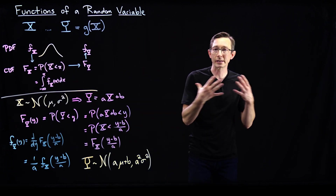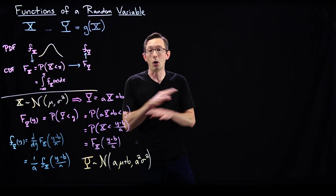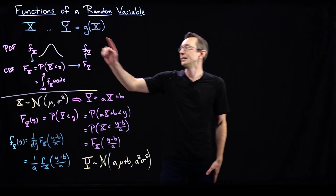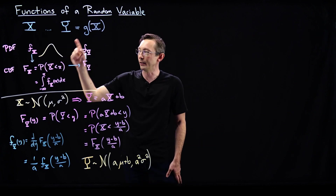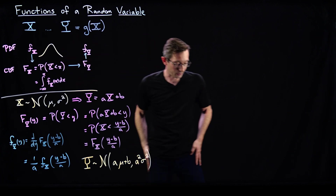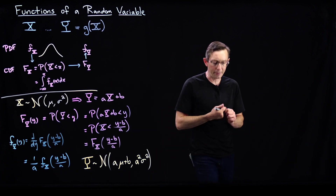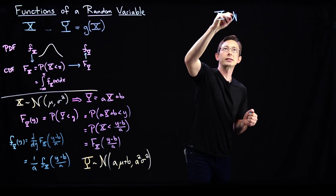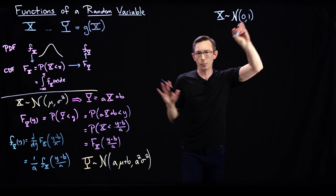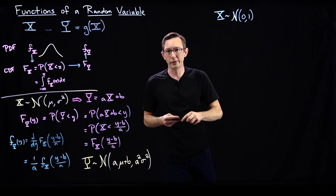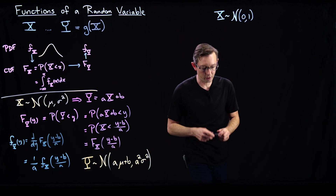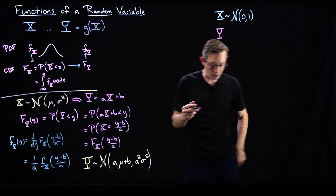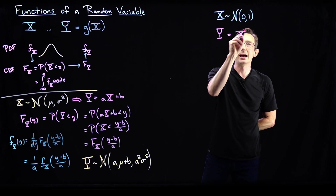But today I want to do a more sophisticated example that actually comes up all over the place in statistics. One of the most useful distributions around is the distribution of x squared if x is a normally distributed random variable. So that's what we're going to do today. I'm going to say that x is just a simple standard unit normal Gaussian distribution — mean zero, standard deviation one — and we're going to introduce a new random variable y, where y equals x squared.